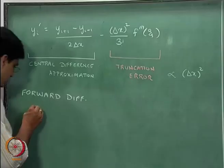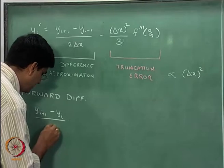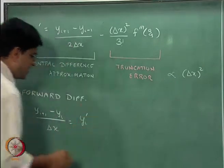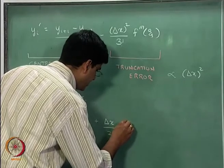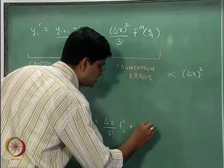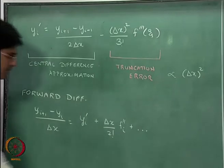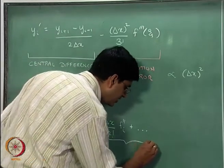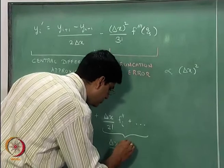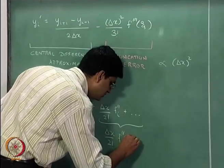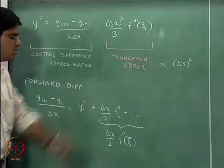When we take terms to the left hand side and divide throughout by delta x, what we get is: y(i+1) minus y(i) divided by delta x is equal to y'(i) plus delta x by 2 factorial times f double dash of i, plus further terms. Applying the mean value theorem, this leading term becomes delta x divided by 2 factorial times f double dash of zeta bar.